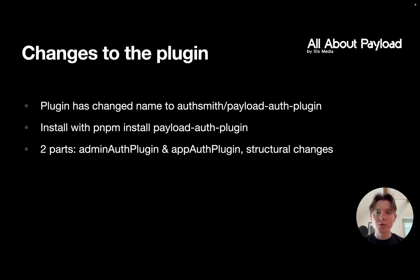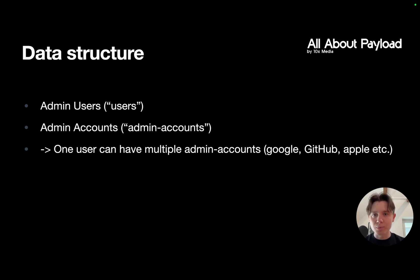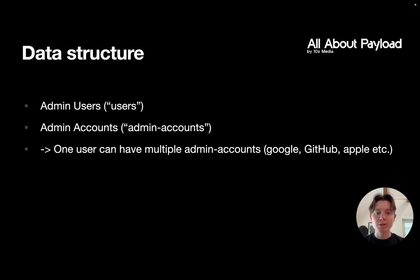There have also been a few other structural changes that we will walk through in a minute. Just a quick recap regarding data structure: if we enable OAuth for a user collection, the OAuth data we need to store is not stored directly in the user document but separately in another collection that the plugin automatically creates, which we call admin accounts. This is because one user can have multiple admin accounts, since every admin account is tied to one OAuth authentication method. So you might have one user with one email who can sign in with Google, GitHub, Apple, etc.